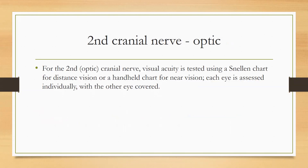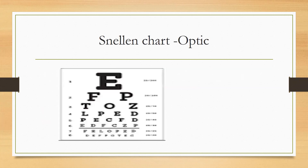Number two is the optic nerve. The optic nerve is the second cranial nerve, and we can test it via the Snellen chart. This is the Snellen chart — as you have seen when you go to the doctor, the doctor also checks your eyes using the Snellen chart. So we will check the optic nerve via the Snellen chart.